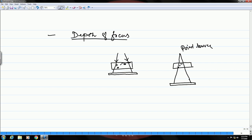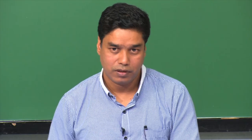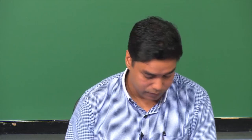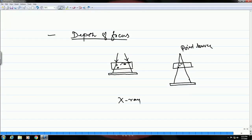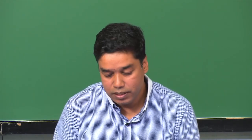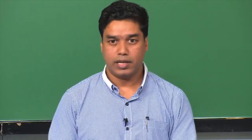A point source or micro-focus source provides better depth of focus compared to a finite size source. When the image is magnified using a point source, the other name for that is X-ray microscopy, because magnification is a key feature of microscopy. Just as optical microscopes use lenses to magnify, here the point source allows magnification of the X-ray image. This is how the size of the focal spot controls the quality of the image.